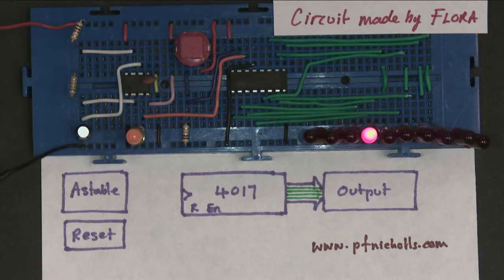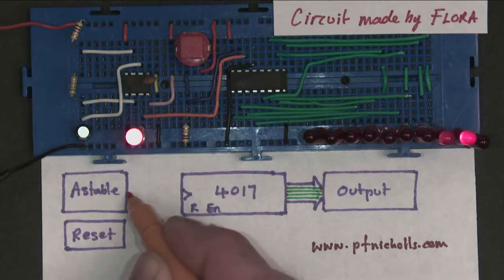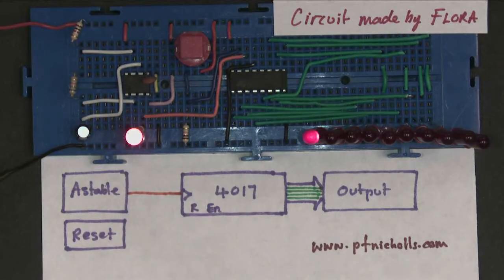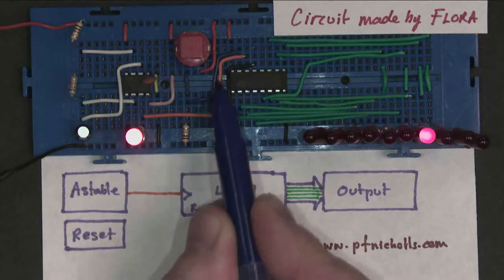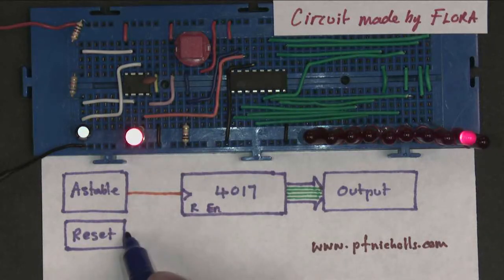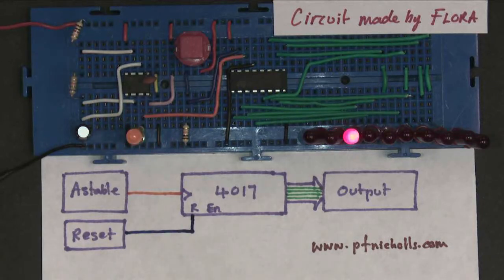I have my astable just here, which is connected through an orange wire to the clock. I have my reset button just here, which is connected through these blue wires into the chip. And I have another very important wire attached, which is quite often overlooked.